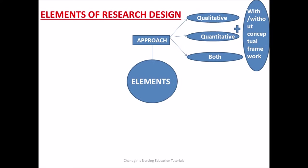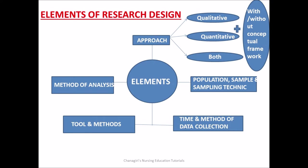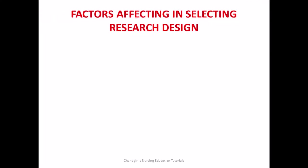When we see the majority of definitions, all definitions say that research design means it is a blueprint of complete research — what the investigator wanted to do for seeking answers for research questions or testing the hypothesis. Next we will see the elements of research design. The elements include: first, approach — it may be qualitative or quantitative or both, with or without conceptual framework; second, population, sample and sampling technique; third, time and method of data collection; fourth, tools and methods; and fifth, method of analysis.